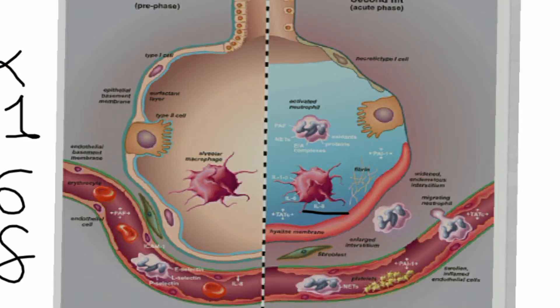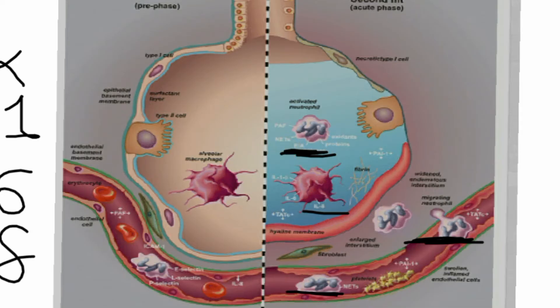Those factors lead to activation of neutrophils in the capillary. Those neutrophils get sequestrated and migrate to the alveoli wall, where they get activated. This is the activated neutrophil. Activated neutrophils secrete proteases and other inflammatory products.